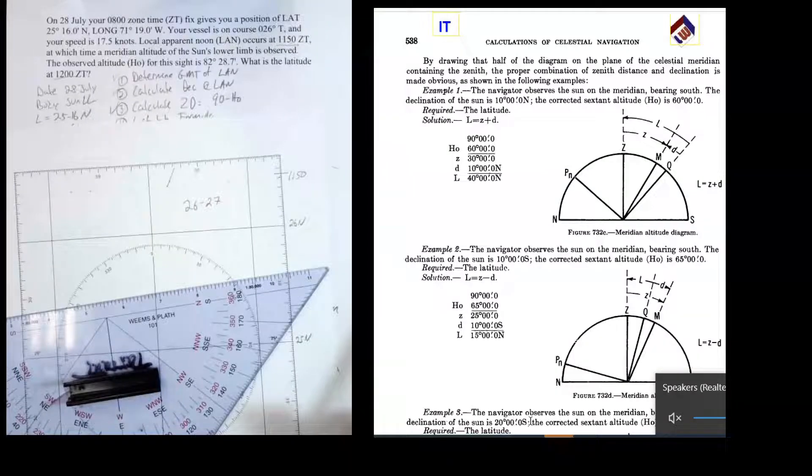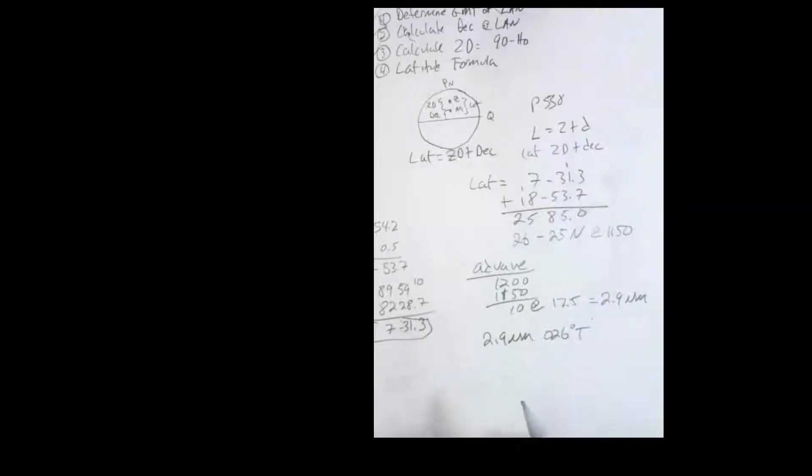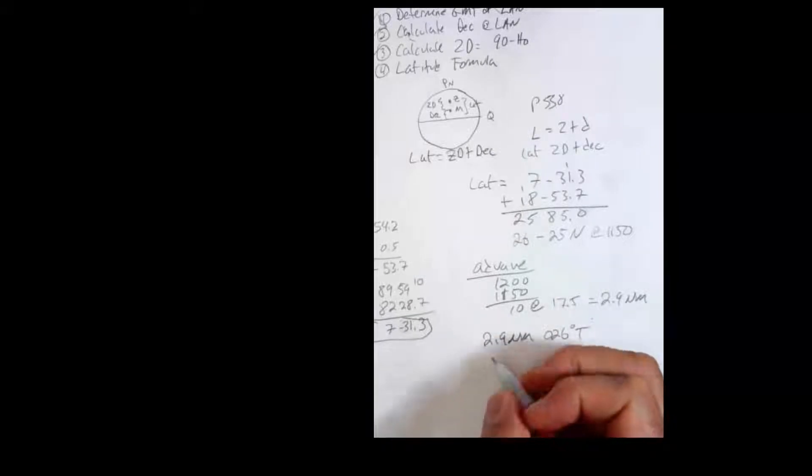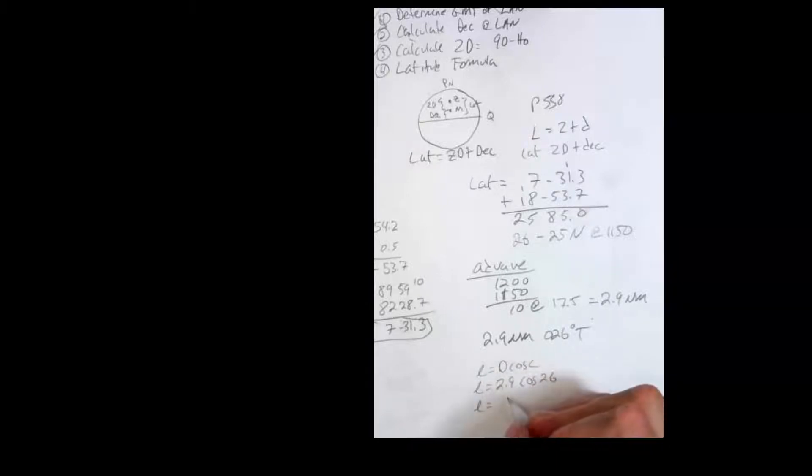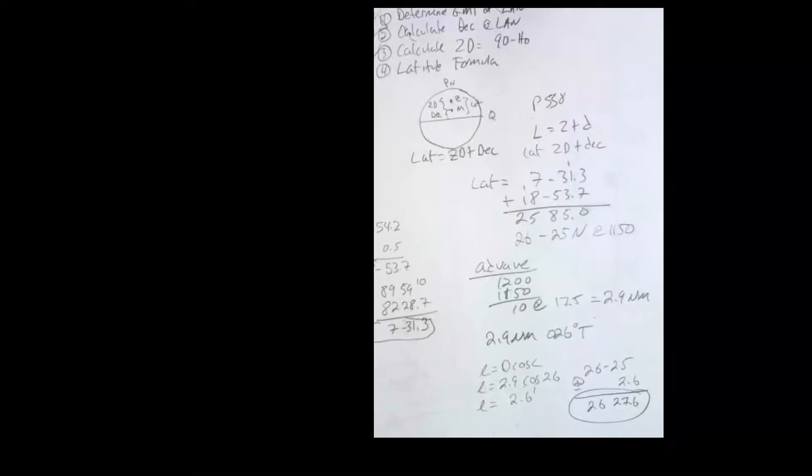I could have also done that by plane sailing. That would be another way to do it. So I will do it by plane sailing. So it turns out that the formula for change in latitude in plane sailing is L equals D cosine C. So L equals D 2.9 times the cosine of our course, 26. So L, if you do that, is going to equal 2.9 times cosine 26 is 2.6. So that's going to be our change in latitude is 2.6 minutes. So what was our original latitude at 1150? That was 26.25. And we're going to change by 2.6. The question is, are we going to add or subtract? Well, again, I'm in northern latitudes. I'm going north, so I'm going to add. So 26, 27.6. And that is, that's doing it by plane sailing. You can do either way. You can also do mid-latitude sailing, but there's no need to do that whatsoever.